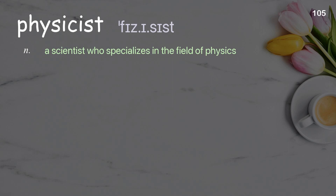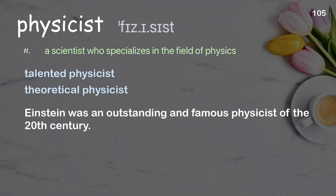Physicist: A scientist who specializes in the field of physics. Examples: Talented physicist. Theoretical physicist. Einstein was an outstanding and famous physicist of the 20th century.